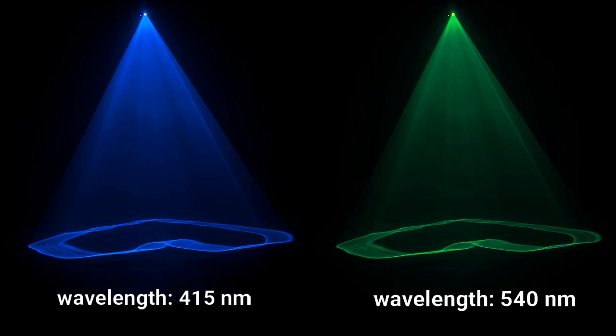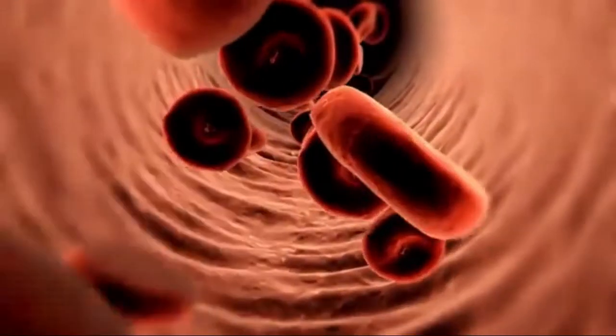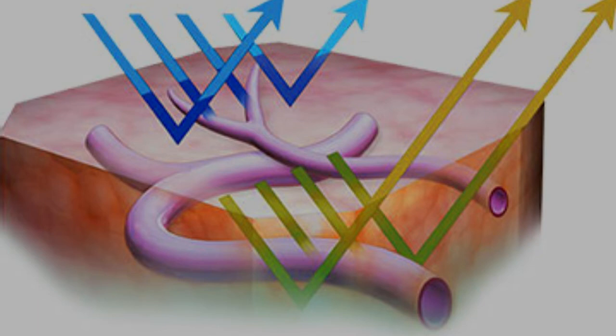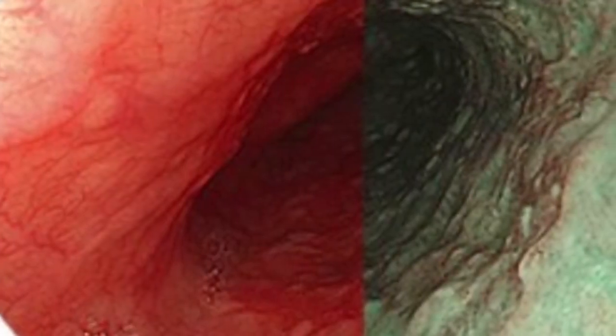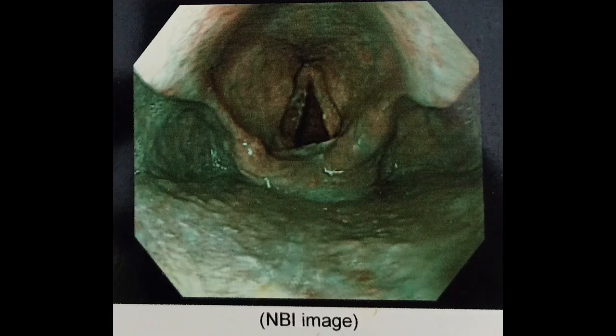The peak light absorption of hemoglobin occurs at these wavelengths, so blood vessels which contain blood and thus contain hemoglobin will absorb most of the light, and the blood vessels will appear very dark. This improves visibility of mucosal blood vessels which normally would not be seen using white light. Blue light highlights the superficial capillary network and green light displays sub-epithelial vessels.